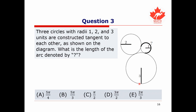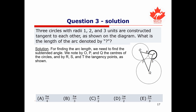Let's complete the third and final question. We're given three circles with radii 1, 2, and 3 units respectively, and all three circles are tangent to each other. We're asked to find the length of the bold arc indicated by the question mark. To find the arc length, we need to determine the angle of this arc. Let's add labels: the centers of the three circles are O, P, and Q, and the points of tangency are R, S, and T.